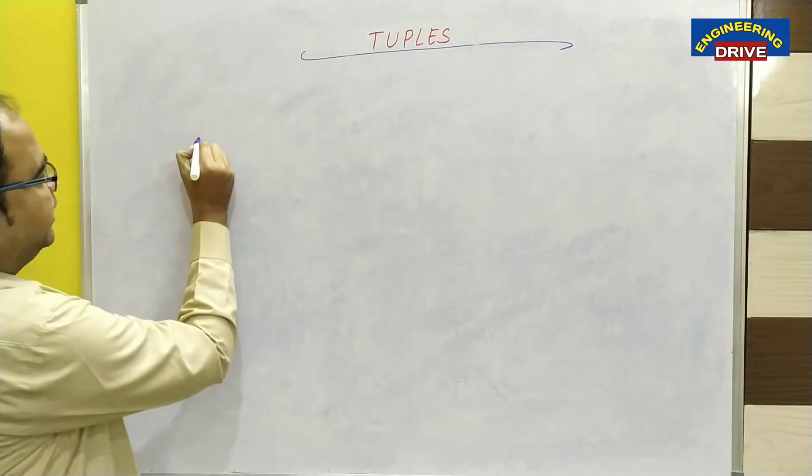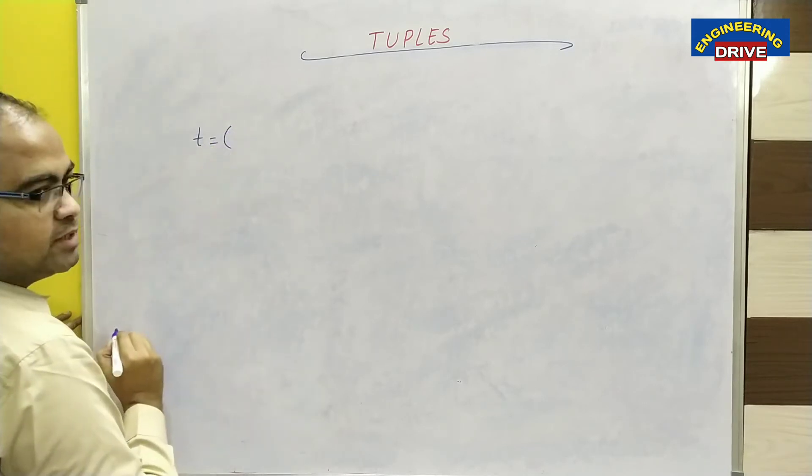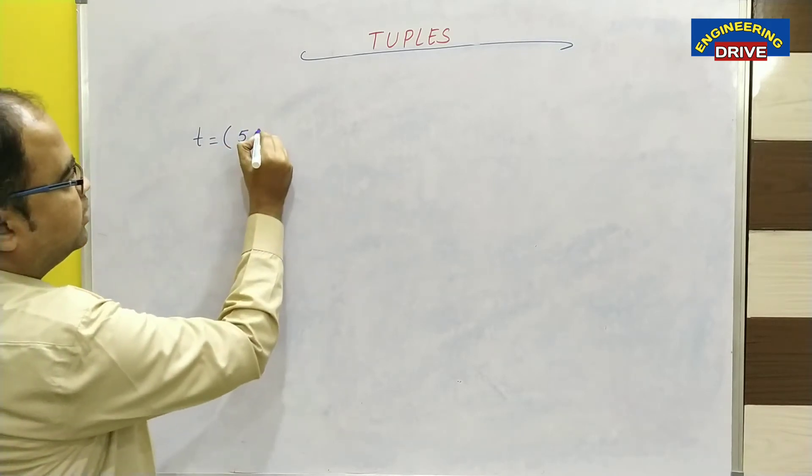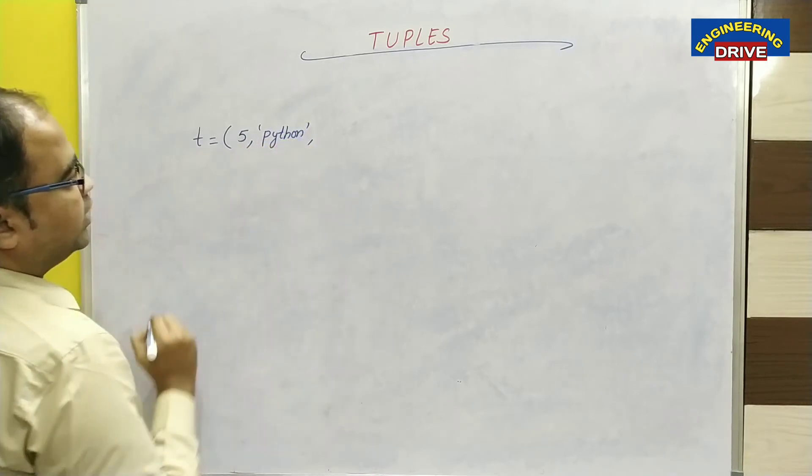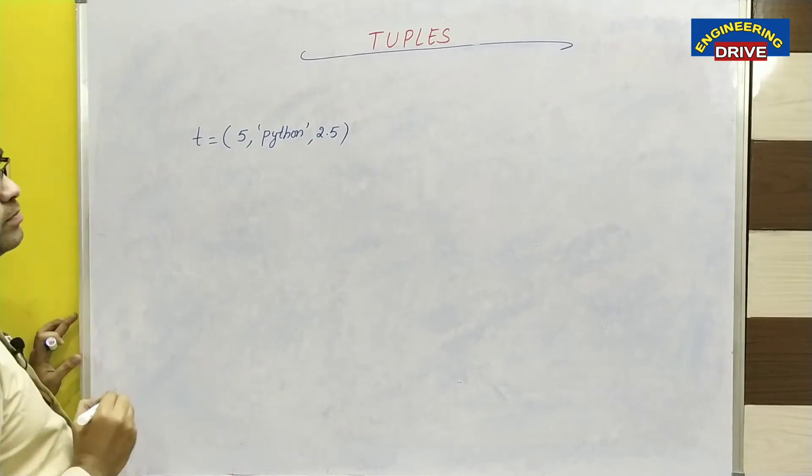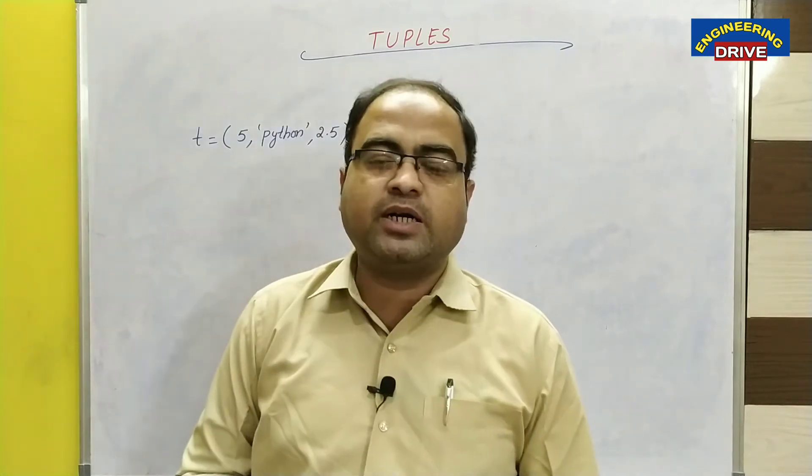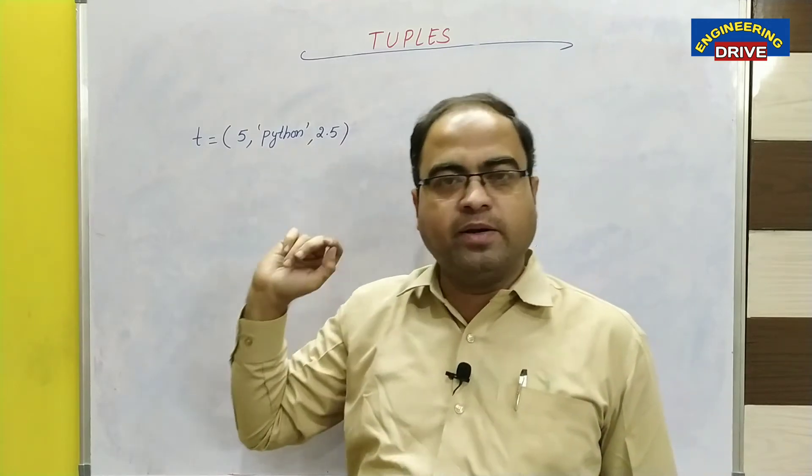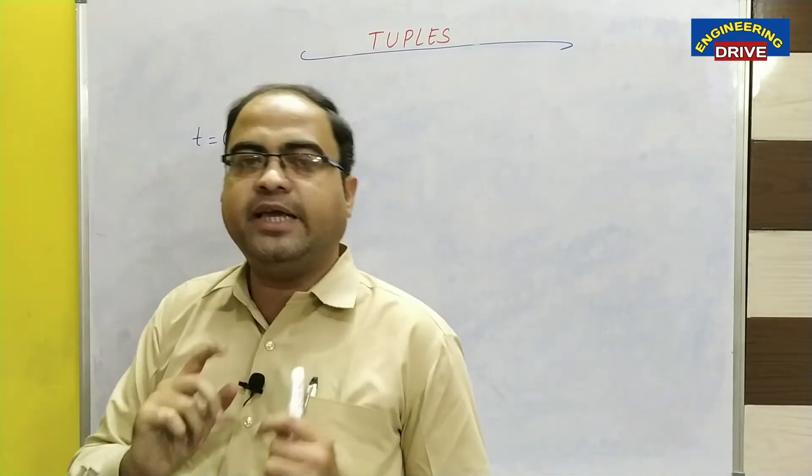I am taking a variable which is used to represent the tuple which is t, t is equal to parenthesis open. Now here I am giving the value 5 that is the first item I have stored in my tuple. Next, second value I am going to store as a string which is python and next I am going to store one more value which is a fractional part 2.5. You can see here three types of items I have stored in my tuple. What are those different types of items? One is an integer, one is a string, another one is a floating point number. These three items I have stored in my tuple which is represented by t.